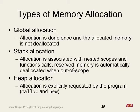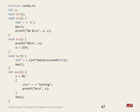Heap allocation is us as programmers explicitly saying, 'Hey, give me some memory, operating system.' And as we all know from Spider-Man — with great power comes great responsibility. They're giving you the power to allocate the memory and you have to make sure you manually deallocate it.